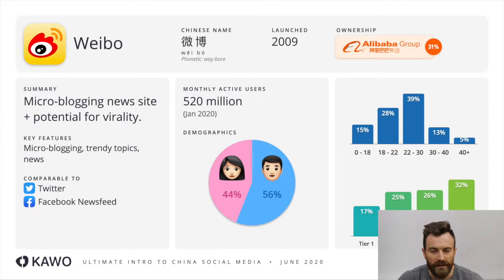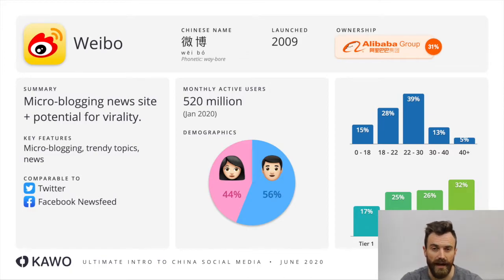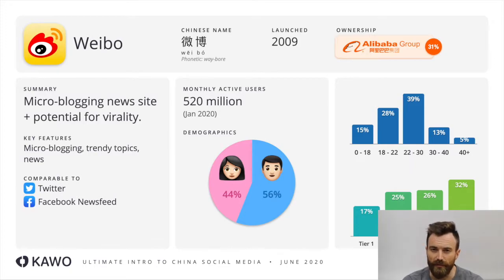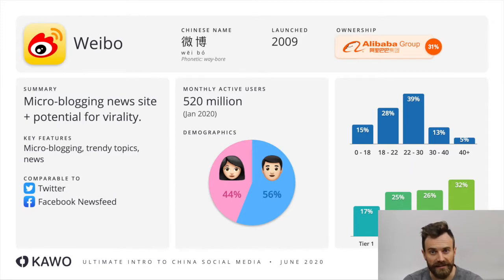Weibo, as we covered before in our previous video on the top three social apps, has over half a billion monthly active users. It appeals to a slightly more male demographic and has a lot of users in lower tier cities. 31% of Weibo is actually owned by Alibaba, although Weibo is also publicly listed too.